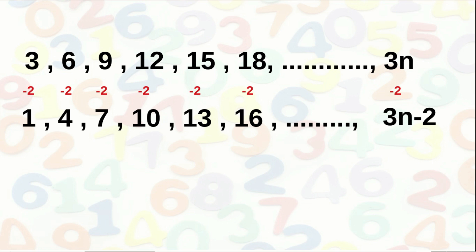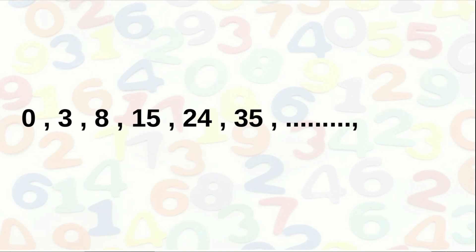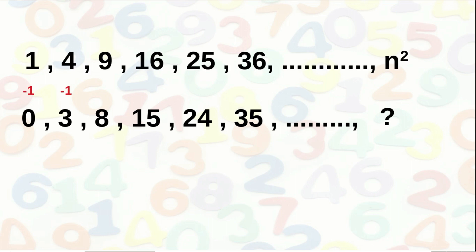One more sequence: 0, 3, 8, 15, 24, 35, etc. Going through the terms, you can see they are got by subtracting 1 from the terms of the sequence of perfect squares: 1, 4, 9, 16, etc. The nth term of the perfect square sequence is n². Therefore the nth term of the given sequence is n² − 1.